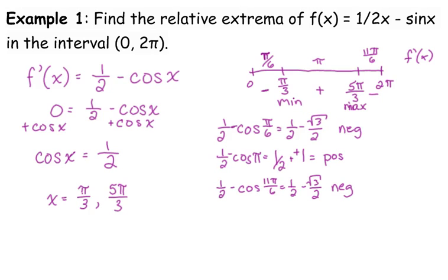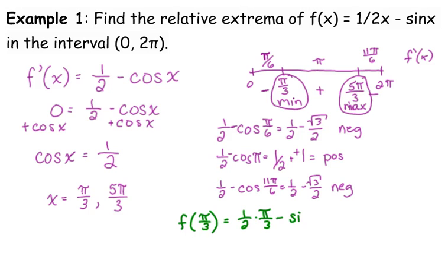Since it says relative extrema, typically that means it wants the actual point — not just where, but the actual point. So we need to take these two places where the extrema occur. We need to calculate what their actual value is by plugging into the original function, because we're just using the derivative to identify characteristics of our original function. So we have one-half times pi over three minus the sine of pi over three. That's pi over six minus square root of three over two, which gives us pi minus three square roots of three over six.